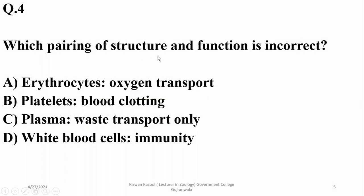Which pairing of structure and function is incorrect? Erythrocytes are involved in oxygen transport, platelets in blood clotting, and white blood cells in immunity. However, plasma performs a variety of other functions as well, making it the incorrect pairing.